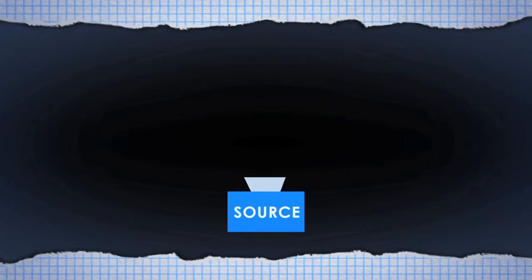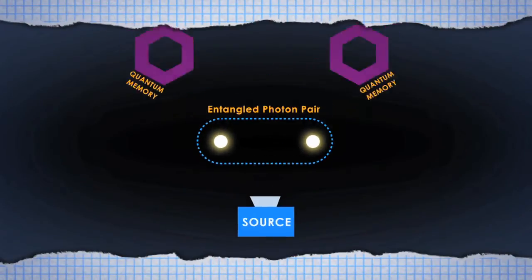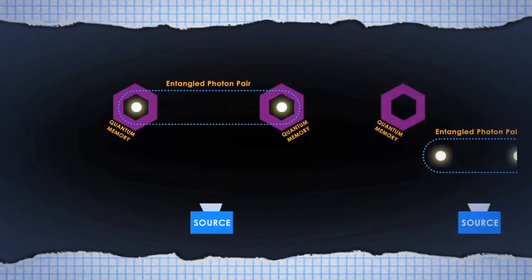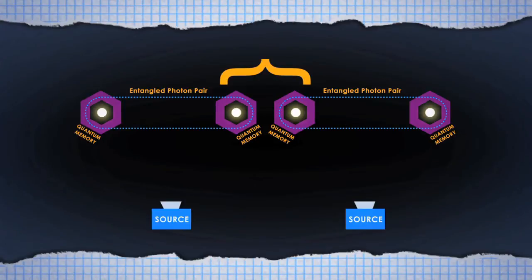So how do these quantum repeaters work? We start with a source that emits pairs of entangled photons. These particles are sent to quantum memories, where they can be stored while we wait for the next entangled pair to be ready. When two neighboring quantum memories are ready, their stored particles are released and measured in a special way.